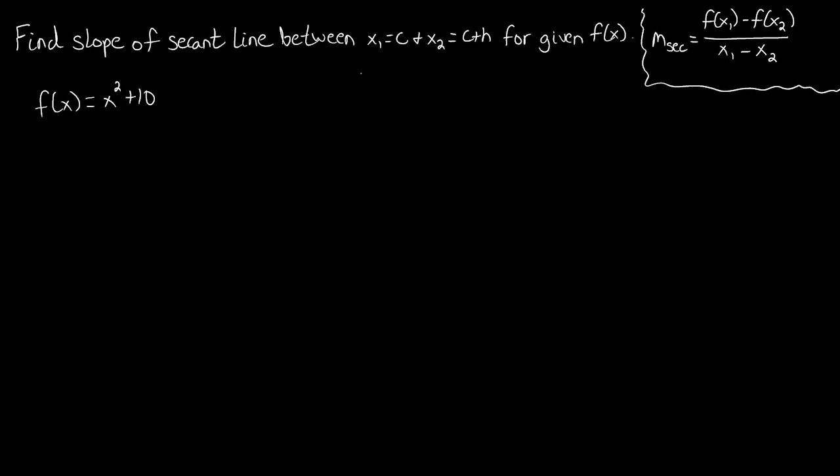We're still going to follow the same process of plugging in the given x values into our function, finding our f of x values, and then using this formula here, the slope of our secant, to figure out what the slope of our secant line is. But it's not going to be numbers, it's going to be more of an expression that we find.